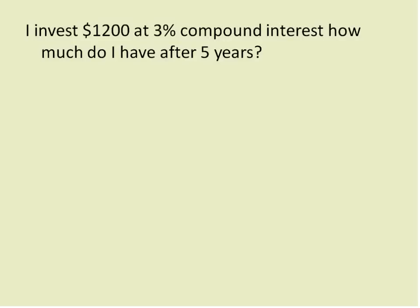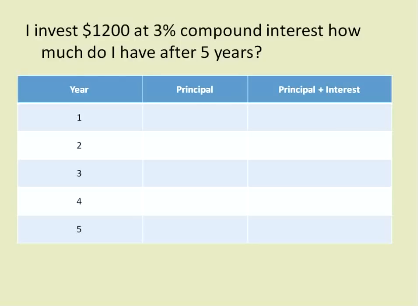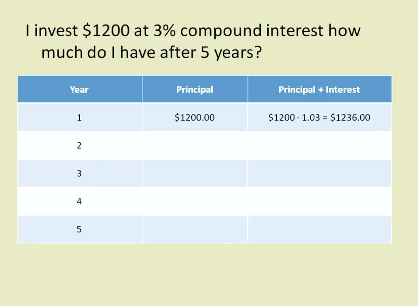Let's work through a problem. I invest $1,200 at 3% compound interest. How much do I have after five years? With these types of questions, it's nice to have a table showing the year, the principal investment for that year, and the amount of principal plus interest. My principal amount is $1,200. I multiply 1,200 times 1.03 — that gives me the amount plus the interest. If you multiply by just the interest rate you'd have to add $1,200 to it; you get the same exact amount. I now take $1,236, and that becomes my principal for year two.